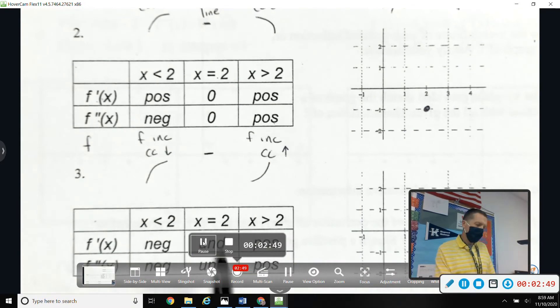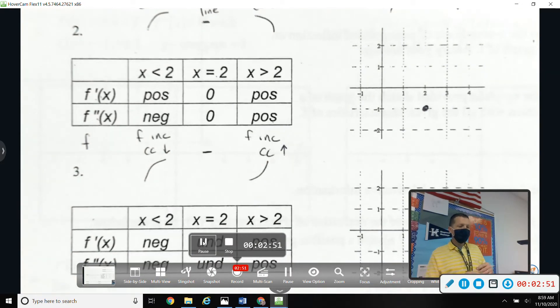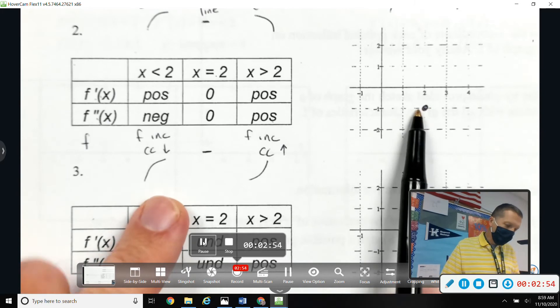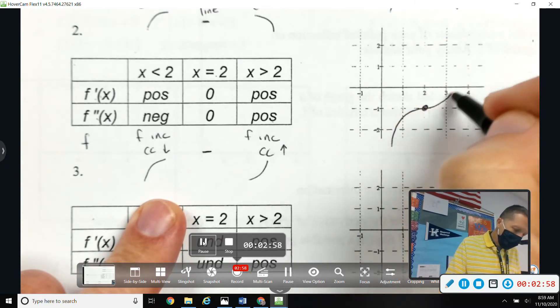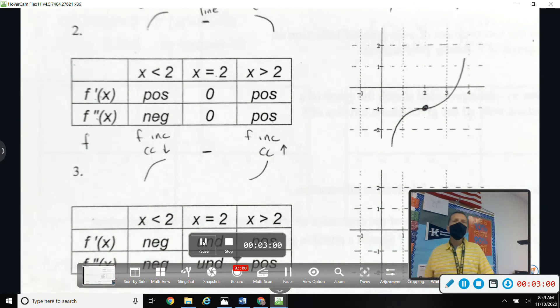So I need to put those pieces together on the graph going through f of 2 equals negative 1. Something like that for number 2.